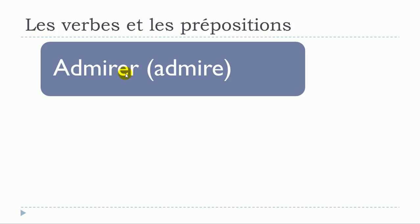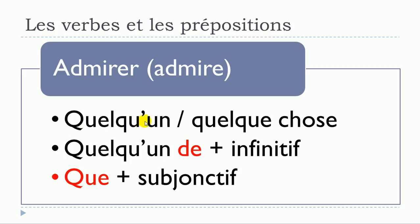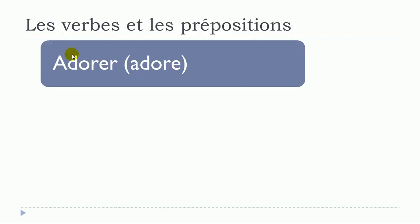Next is admirer. Each time I say quelqu'un or quelque chose it means there is no preposition. So: admirer quelqu'un, admirer quelque chose, admirer quelqu'un de plus verbe à l'infinitif, or admirer que plus verbe au subjonctif.